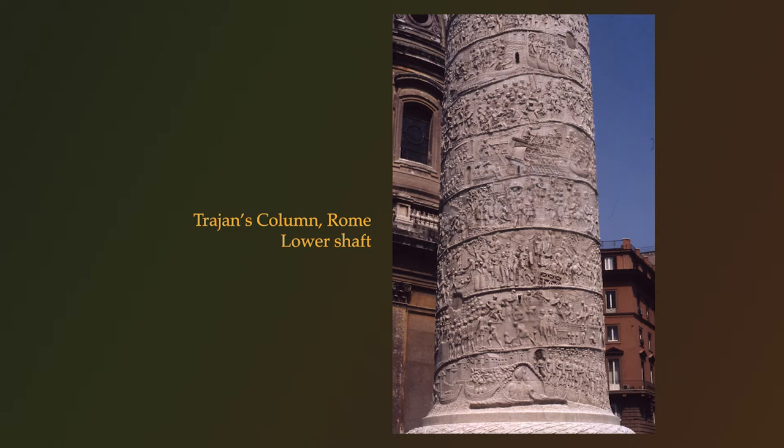Trajan's Column is worth studying closely not just to help us understand how war and victory were depicted in the Roman Empire, but also to get us thinking about the very complex relationship between the stories we tell and the ways that we do war. John, hello and welcome to the Visualizing War podcast. Trajan's Column is right in the center of Rome — it's the climax of one of the largest, if not the largest, complexes of public buildings constructed by Roman emperors. It was dedicated in 113 AD.